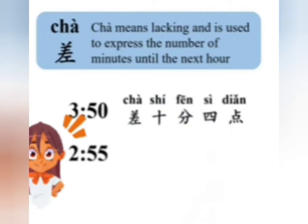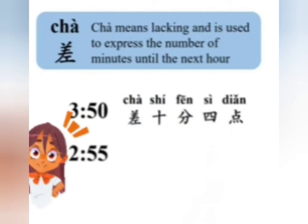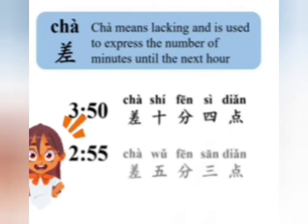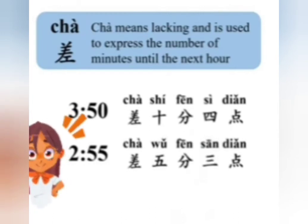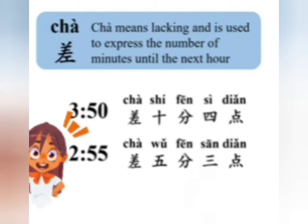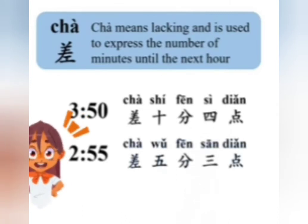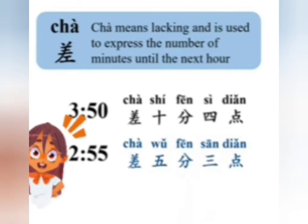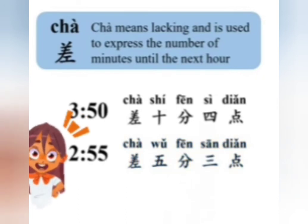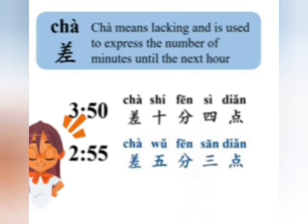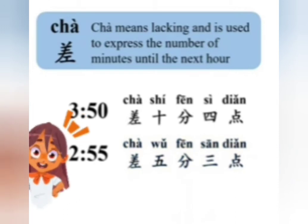And 2:55 is 5 minutes to 3, so you can say 差五分三点, which means 'lacking 5 minutes, 3 o'clock' — in other words, 5 minutes to 3. Please repeat: 差五分三点.